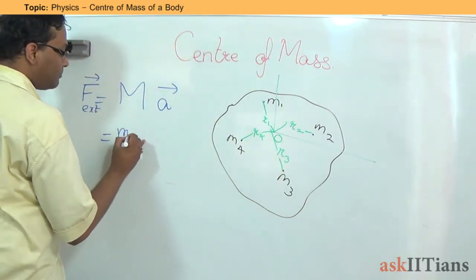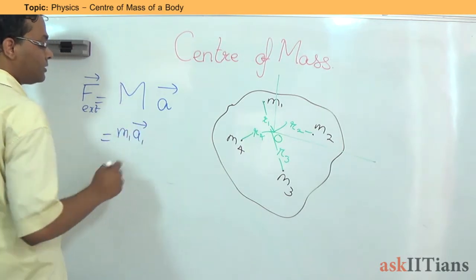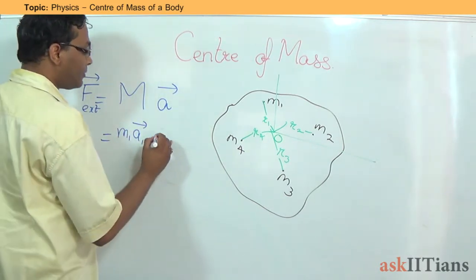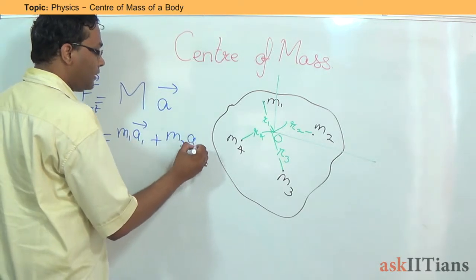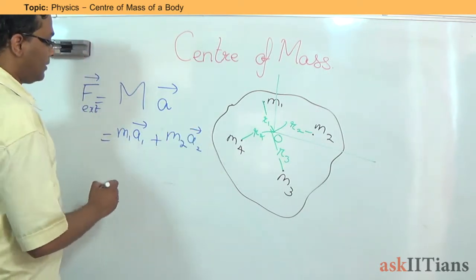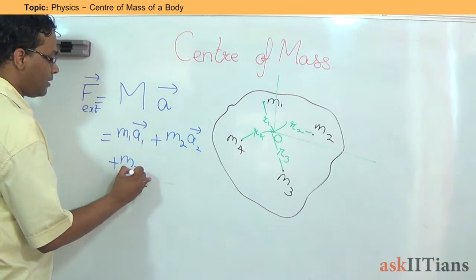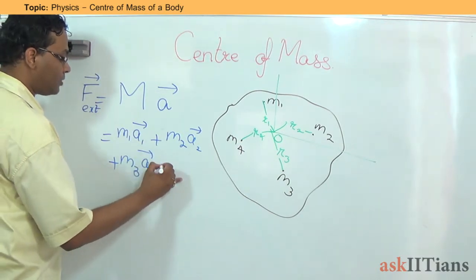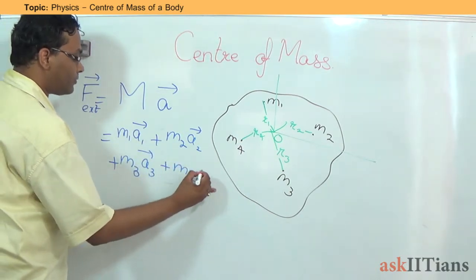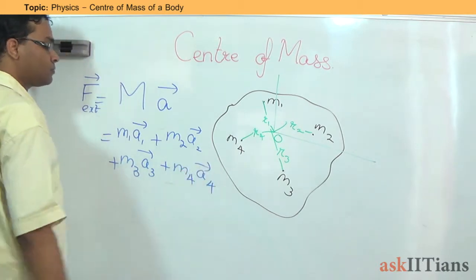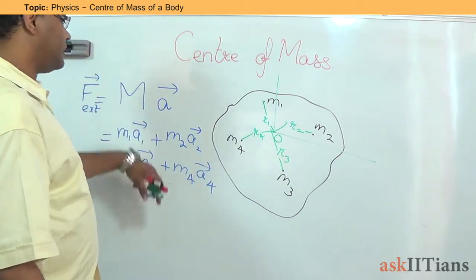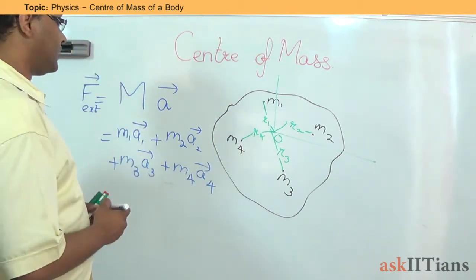So I can simply say that m1 a1, this is the force acting on the mass m1. Then you have m2 a2, then m3 a3, plus m4 a4. So these are the different forces that we have.